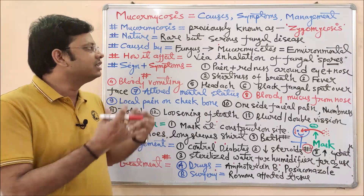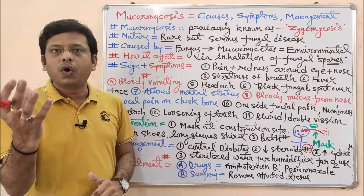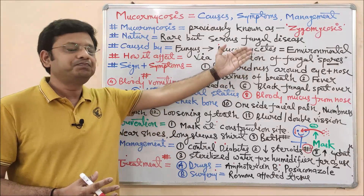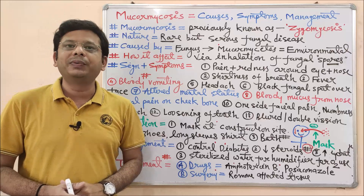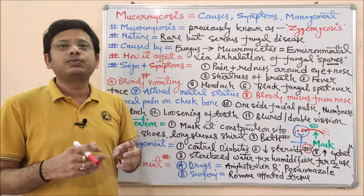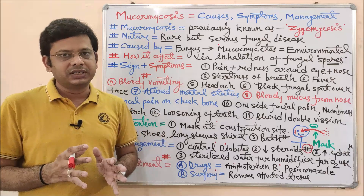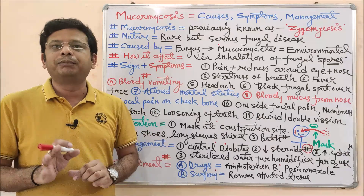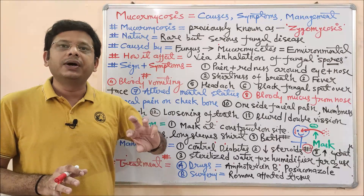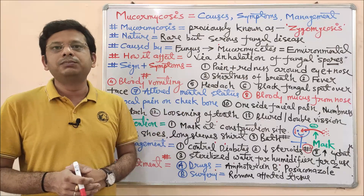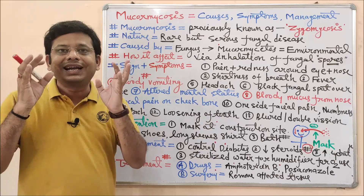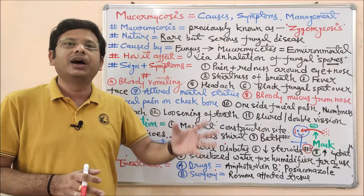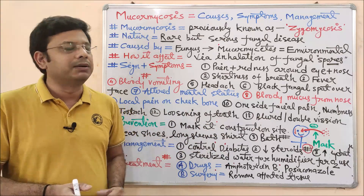It affects the body by inhalation. Now, what is the difference between signs and symptoms? Signs are features which are seen in any person but may also appear in other diseases. Symptoms are the characteristic features that are continuously seen in the same person who is suffering from mucormycosis — those are the specific characteristic features.